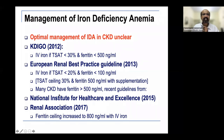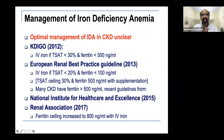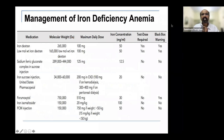Many CKD patients were found to have inherently elevated ferritin levels. Therefore the two most recent guidelines — NICE and RA — say to consider increasing the upper ferritin threshold to 800 ng/mL; you can continue to give IV iron even if ferritin is on the higher side, because patients may have non-obvious iron deficiency until ferritin reaches 800 ng/mL.